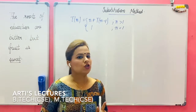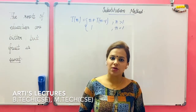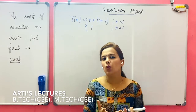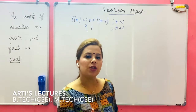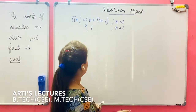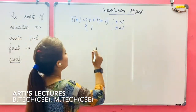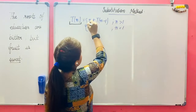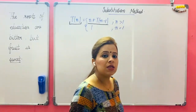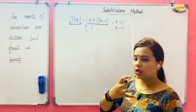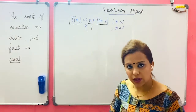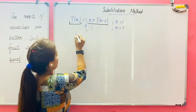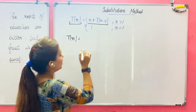Hello everyone, today I am going to solve the second problem using the substitution method. We have seen the advantages and disadvantages of the substitution method in the previous video, so if you want to know details about it, kindly visit the previous video first. The second problem is T(n), which takes time T(n) and can be broken into n plus T(n-1). There is a loop running for n times every time, and the function is calling itself again with n minus 1 as input.